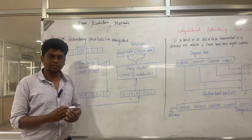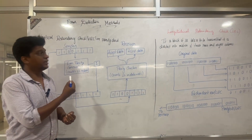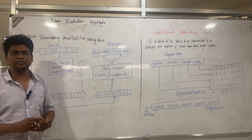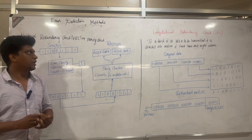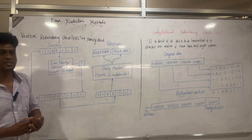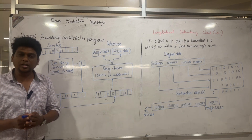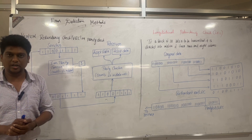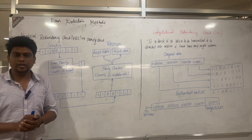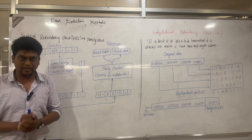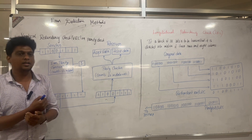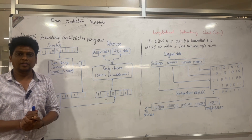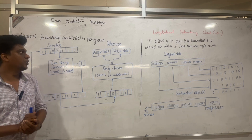Welcome to this video on error detection and correction methods. There are several types of error detection methods: vertical redundancy check, longitudinal redundancy check, checksum, and cyclic redundancy check (division rule).